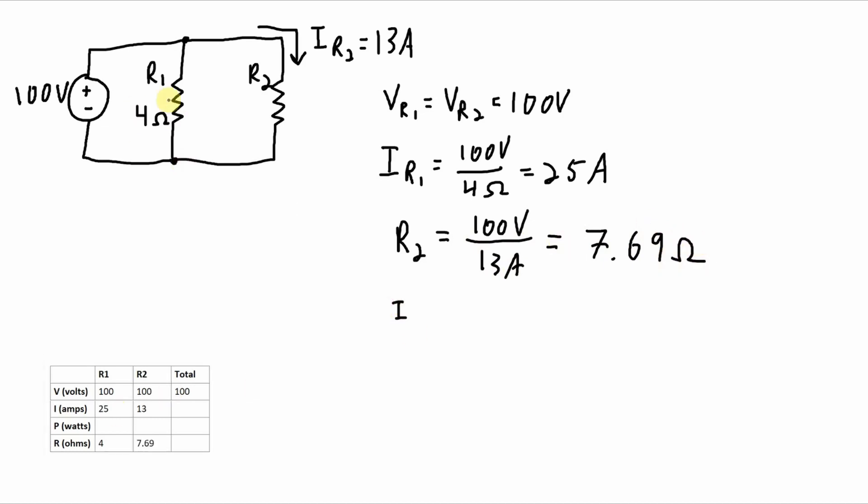Total current. Well, since these are in parallel, the total current will come from whatever's going through R1 plus whatever's going through R2. So let's add those two together. We've got 25 amps plus 13 amps. That's 38 amps. And the powers. We can use any of the equations we have for power. Let's use voltage times current for all of these.